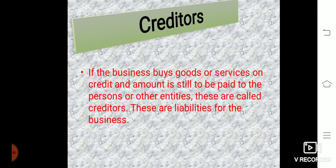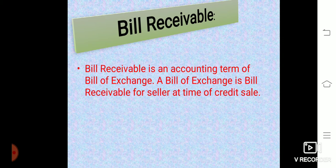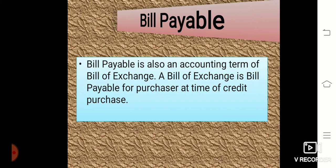Next is creditor. If a businessman buys goods or services on credit and an amount is still to be paid to the person or entity, these are called creditors. Creditors are liabilities for the business. Next is bills receivable — an accounting term related to bills of exchange. A bill of exchange is bills receivable for the seller at the time of a credit sale. Bills payable is also an accounting term of bills of exchange — it is bills payable for the purchaser at the time of a credit purchase.